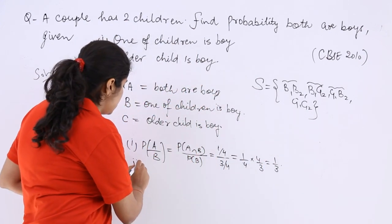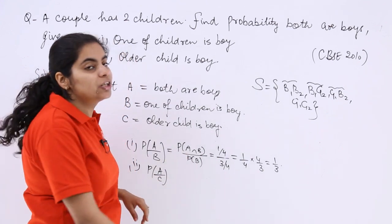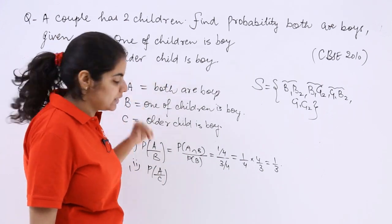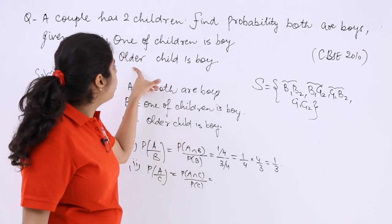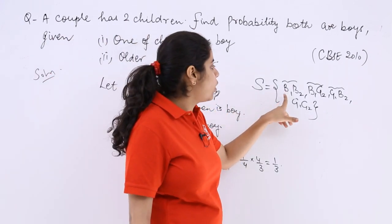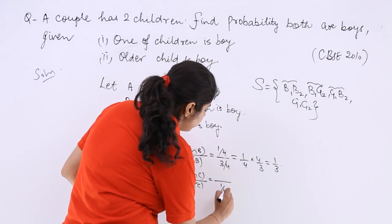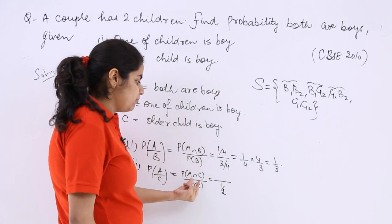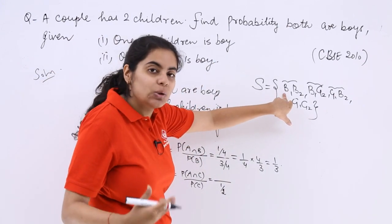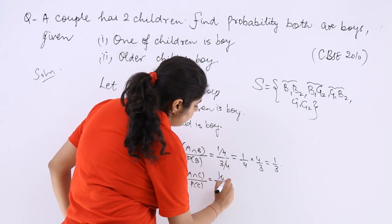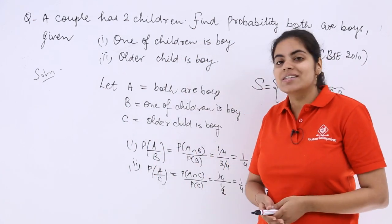For the second part, we find P(A|C) — both are boys given the older child is a boy. The older child being a boy occurs in cases BB and BG, so P(C) = 2/4 = 1/2. P(A intersection C), both are boys and older child is a boy, is only case BB, so P(A intersection C) = 1/4. Therefore P(A|C) = (1/4) / (1/2) = 1/2. So the answers are 1/3 and 1/2.